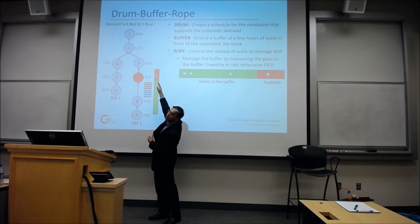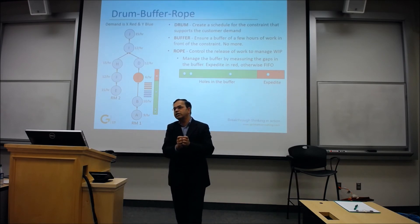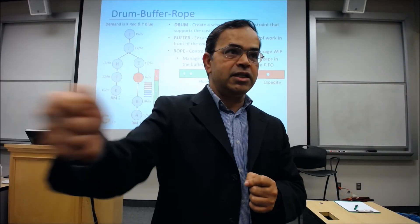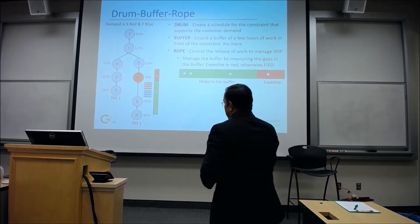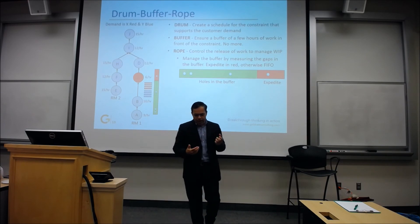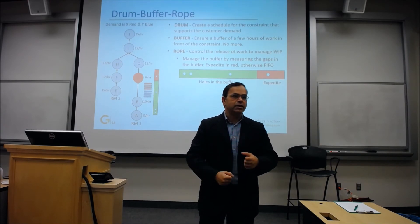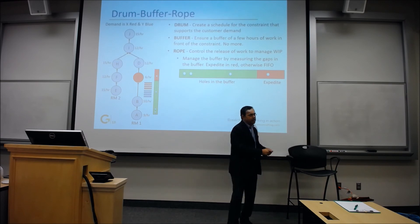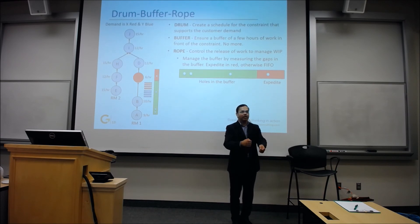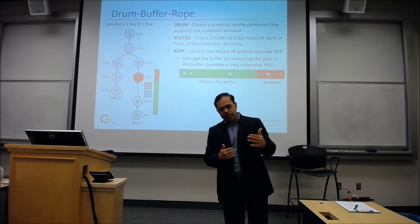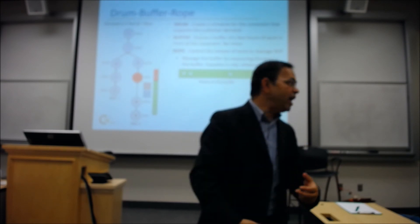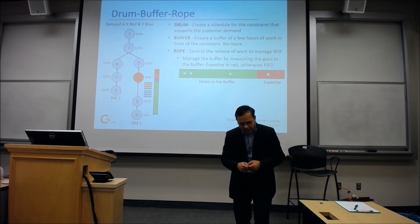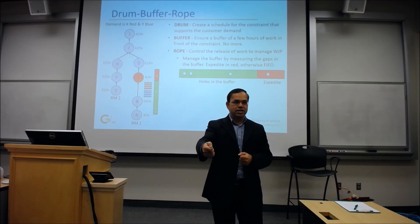Now I'm going to introduce one term: rope. Rope is when do I release something — this is the subordination piece. When C is marching to a drum beat, I go back a certain time frame and say this is my rope, and I release material based on that. Let's say the touch time is 10 minutes, and we do 10 times that — so 100 minutes. That is the rope length. I release material 100 minutes before C is supposed to process.